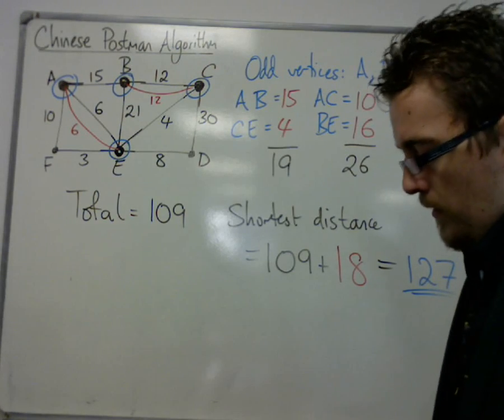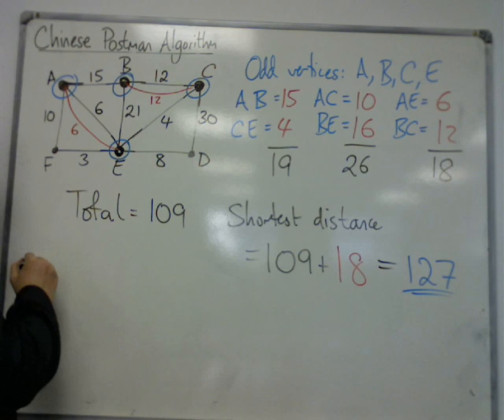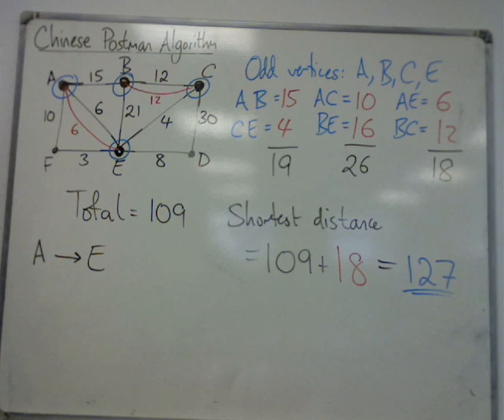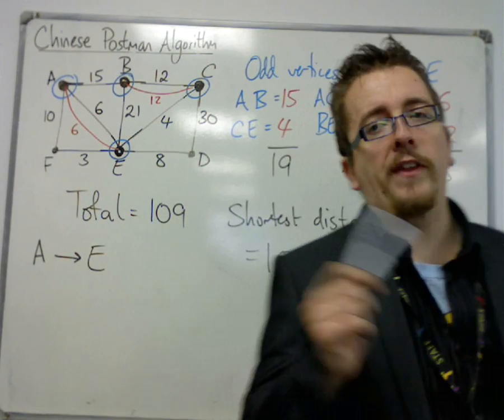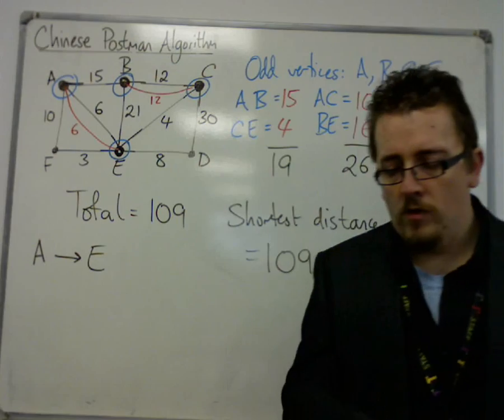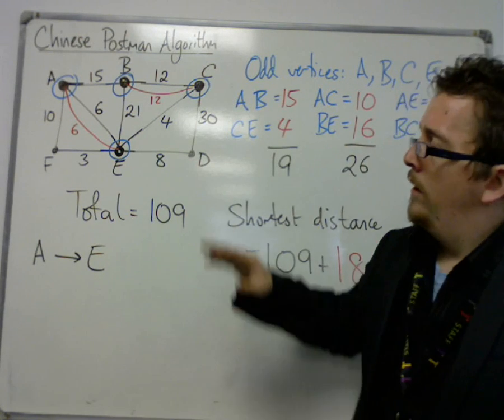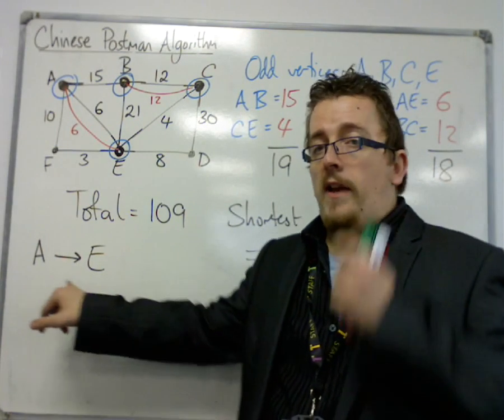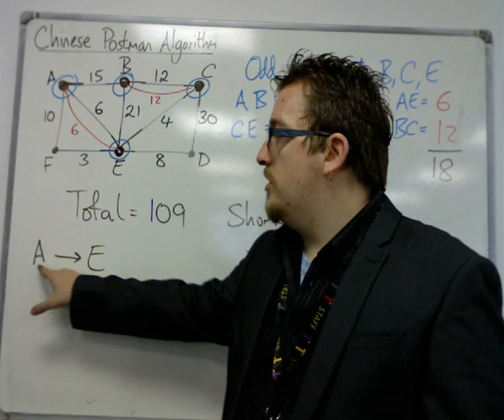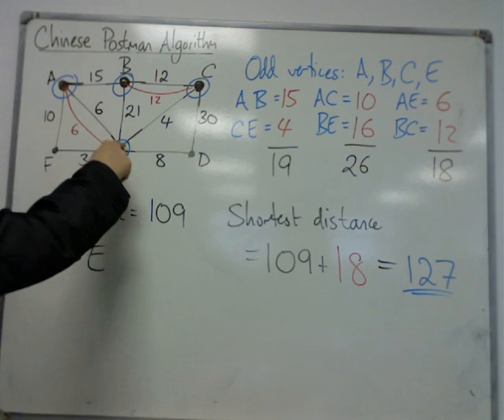Let's say, however, that the postman wants to start at A and finish up at E. What is now the shortest distance that he must travel? Well, if you remember back to when we looked at Eulerian graphs, there's an earlier video for this. So, make sure you check it out if you can't remember. Remember, in order to start at one vertex and end at another vertex, you must have a semi-Eulerian graph, which means that these two vertices are the only odd vertices in the graph. So, these two must remain odd vertices.